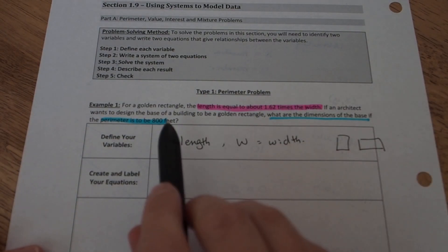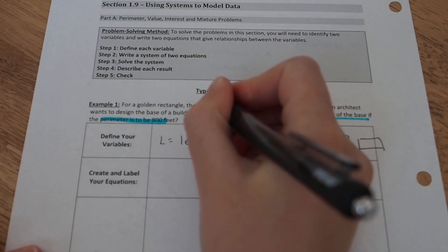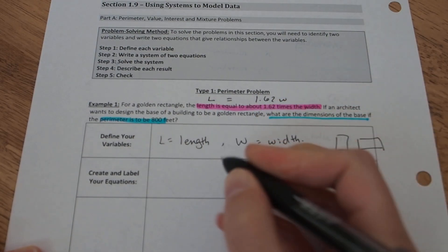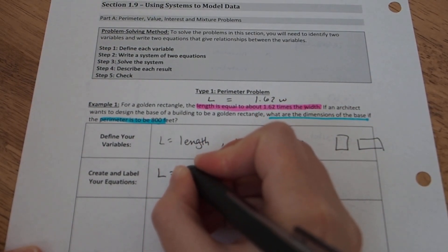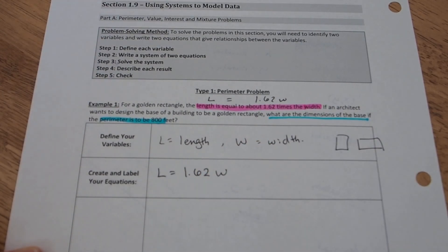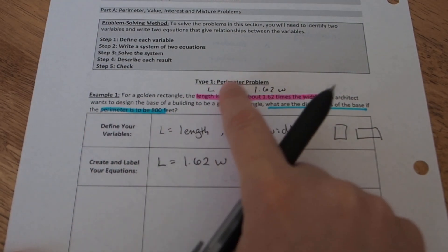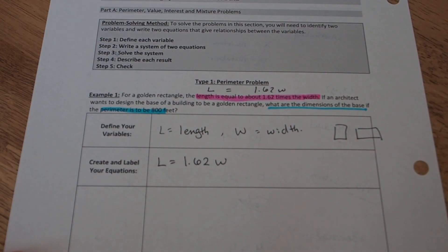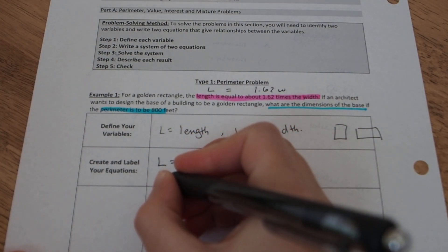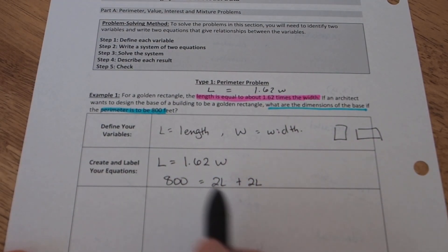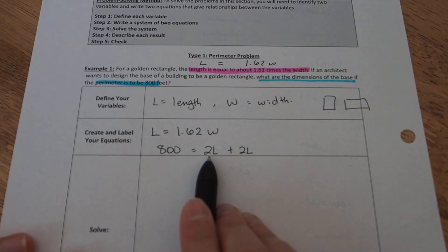So create two equations. For golden rectangle, the length is equal to about 1.62 times the width. That actually is going to give me my first equation. So length is equal to 1.62W is my first equation. The second equation is going to come from this perimeter statement. All of these problems are going to require some sort of prior knowledge, and the perimeter setup requires prior knowledge that perimeter of a rectangle is equal to two lengths plus two widths. So instead of saying P equals, since I know the perimeter is 800, we're going to say 800 equals two lengths plus two widths.